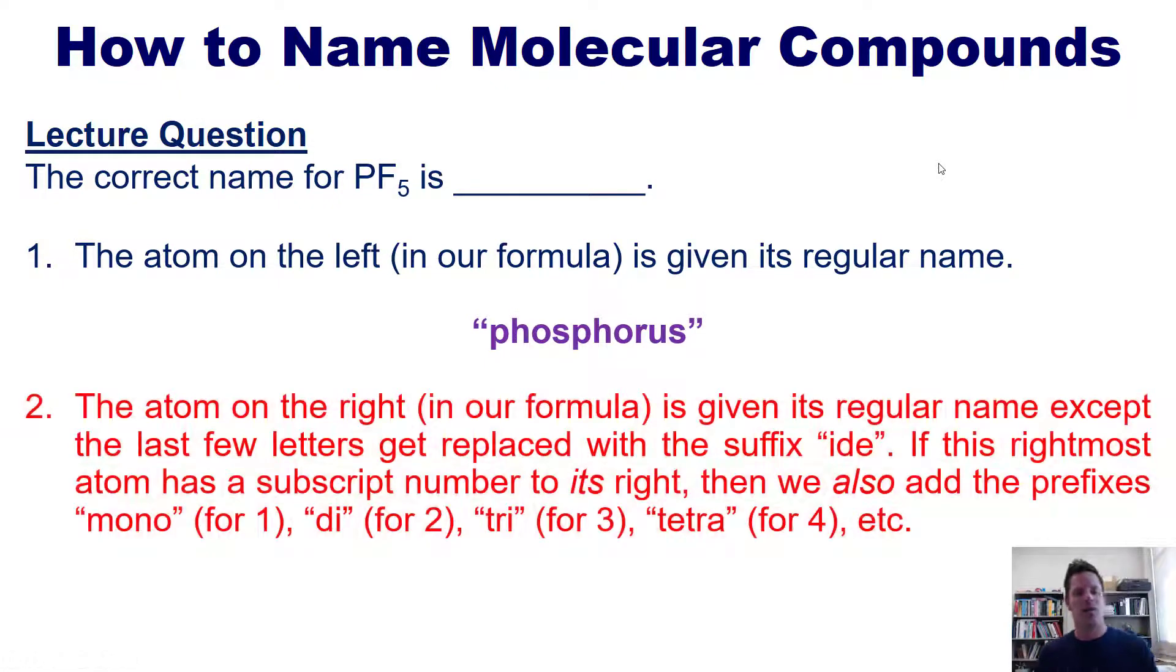Step two: The atom on the right in our formula, in this case fluorine, is given its regular name straight off of the periodic table, except the last few letters get replaced with the suffix '-ide'. So you'll notice that fluorine right here is on the right in our formula, so we would write down fluoride instead of fluorine. You'll also notice that there is a number right here, a subscript five. So if it has a subscript number to its right in the formula, then we also have to add the appropriate prefix.